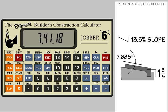The answer is 7 degrees, 41 minutes, and 18 seconds. While we are working with degrees, let's illustrate how to enter a degree, minutes, and seconds degree in the calculator.